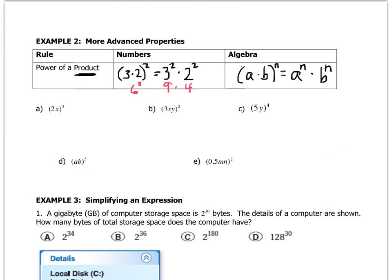So let's actually apply it. Letter a says 2x to the 3rd. So that's the same as saying 2 to the 3rd times x to the 3rd. Now, if you can do something, do it. You can do 2 to the 3rd. 2 to the 3rd is 8. So the best way to write this answer is 8x to the 3rd.